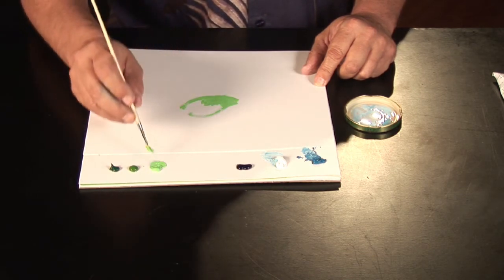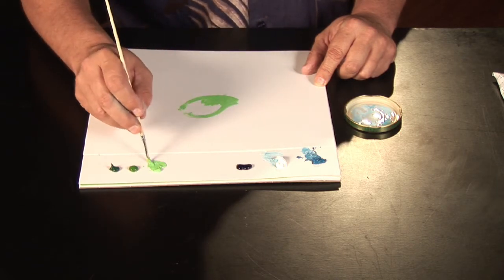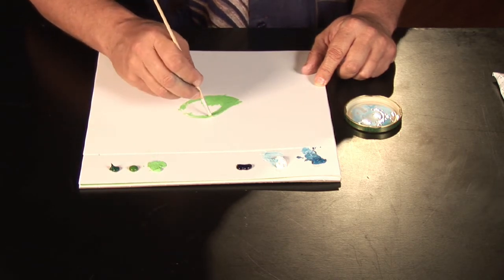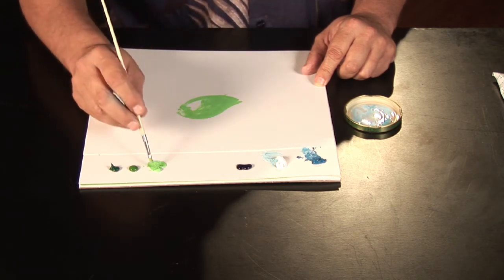Best part about oils is you can always go over it. So if you make a mistake, it's a lot of fun because you can always tweak something later on. You can paint your leaf a little bit the way you like it.